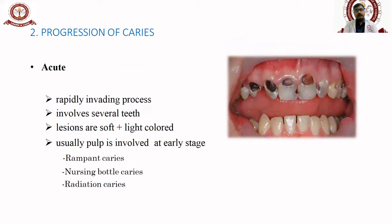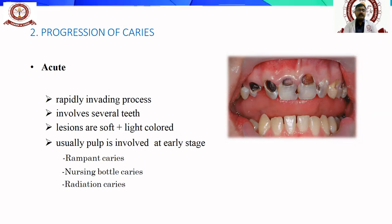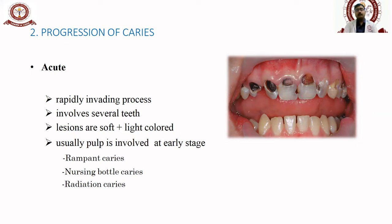Regarding the progression of caries, it can be acute. Acute caries progress very rapidly and involve more than five or six teeth in the oral cavity. They are very soft and light in color, and usually the pulp is involved at an early stage. This is commonly seen in school-going children. Variations include rampant caries, extensive bottle caries, and radiation caries.